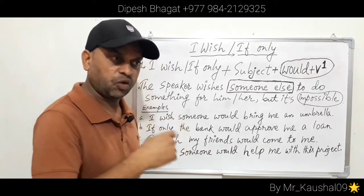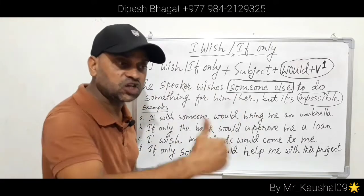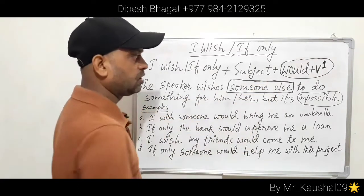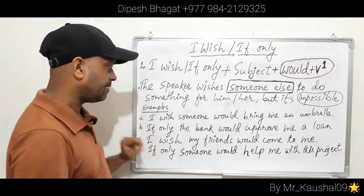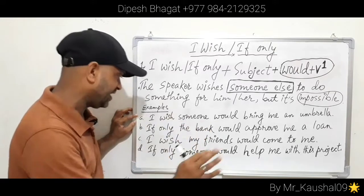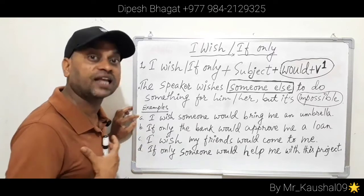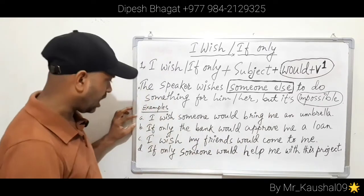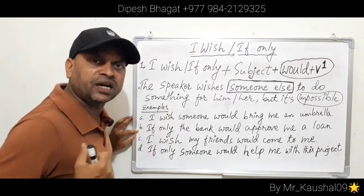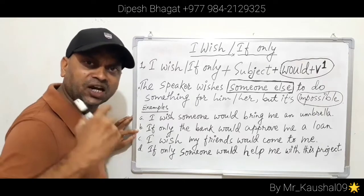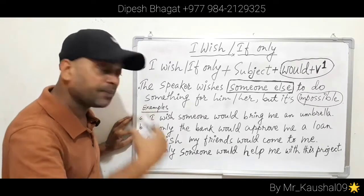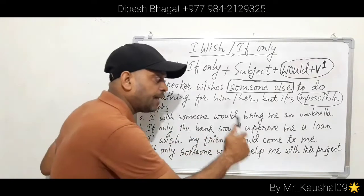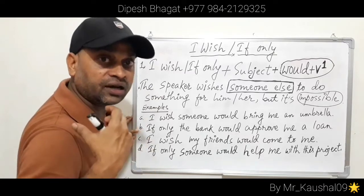The structure 'would + verb' is used when the speaker wishes somebody else to do something for him or her, but knows it is impossible. For example, it is raining — what can my wish be? 'I wish somebody would bring me an umbrella.' Or suppose I'm in a big economic crisis: 'If only the bank would approve me a loan.'